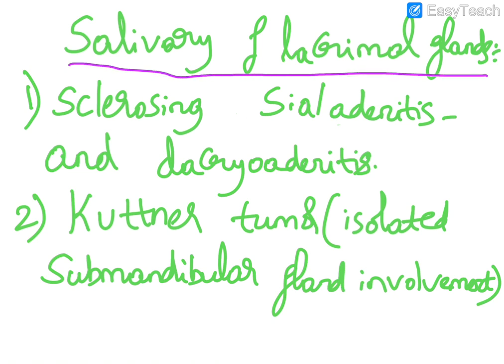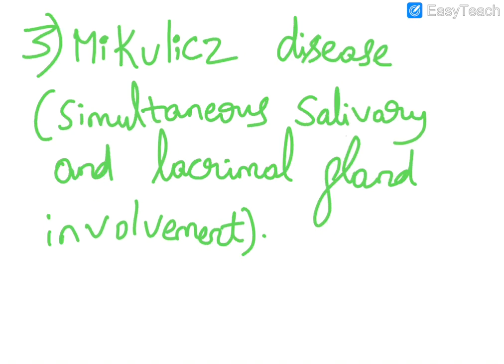IgG4 related disease manifests in salivary and lacrimal glands as sclerosing sialadenitis and dacryoadenitis. Kuttner's tumor, which is an isolated submandibular gland involvement, is seen here. Then Mikulicz disease, where simultaneously salivary and lacrimal gland involvement is noted.